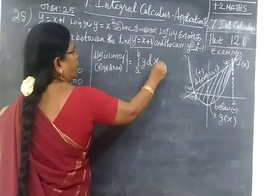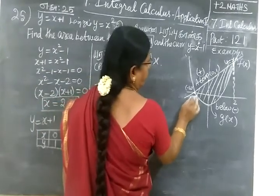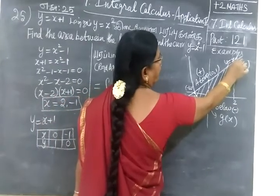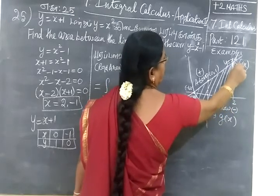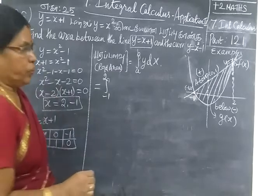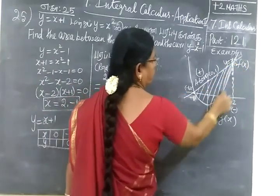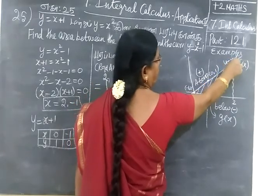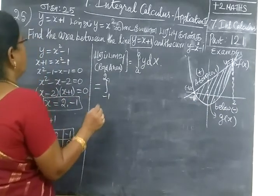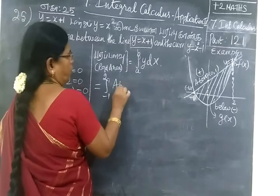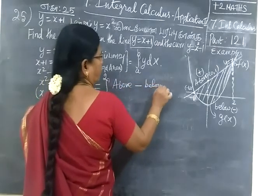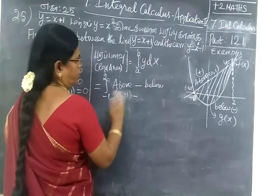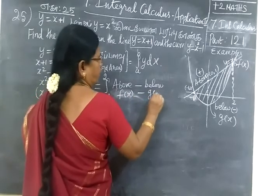Integrate from a to b with respect to dy. The limit is minus 1 to 2. So the area equals integral from minus 1 to 2 of the above curve minus the below curve. Above curve is y equal to x plus 1, then minus the below.